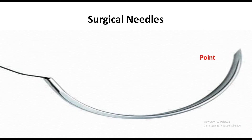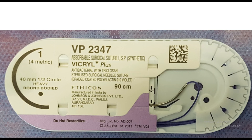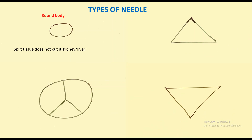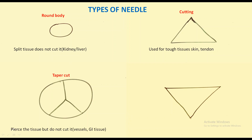Now we should know about the suture needle. The needle has a point, a body, and an end. The point can be blunt or sharp, the body can be round or cutting, and the end can be swaged or eyed. A round body splits the tissue without cutting — used in kidney and liver. The cutting body is used for tough tissue, skin, and tendon. Taper-cut needles pierce tissue without cutting — used in vessels and GI tissues. Reverse cutting is the opposite of cutting.